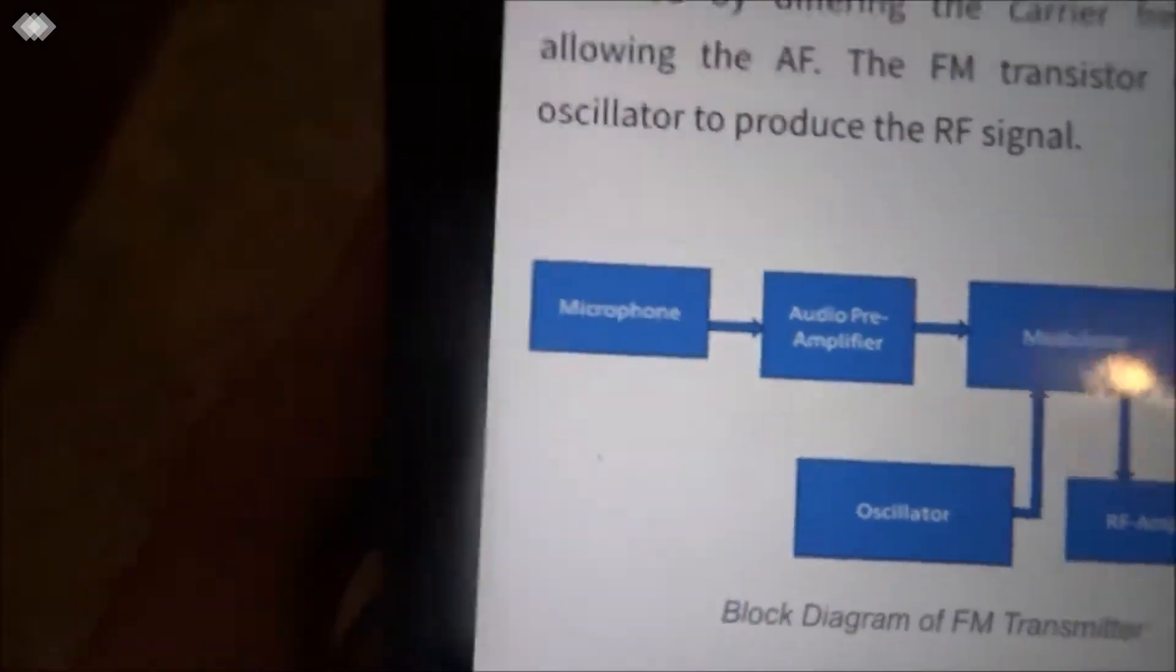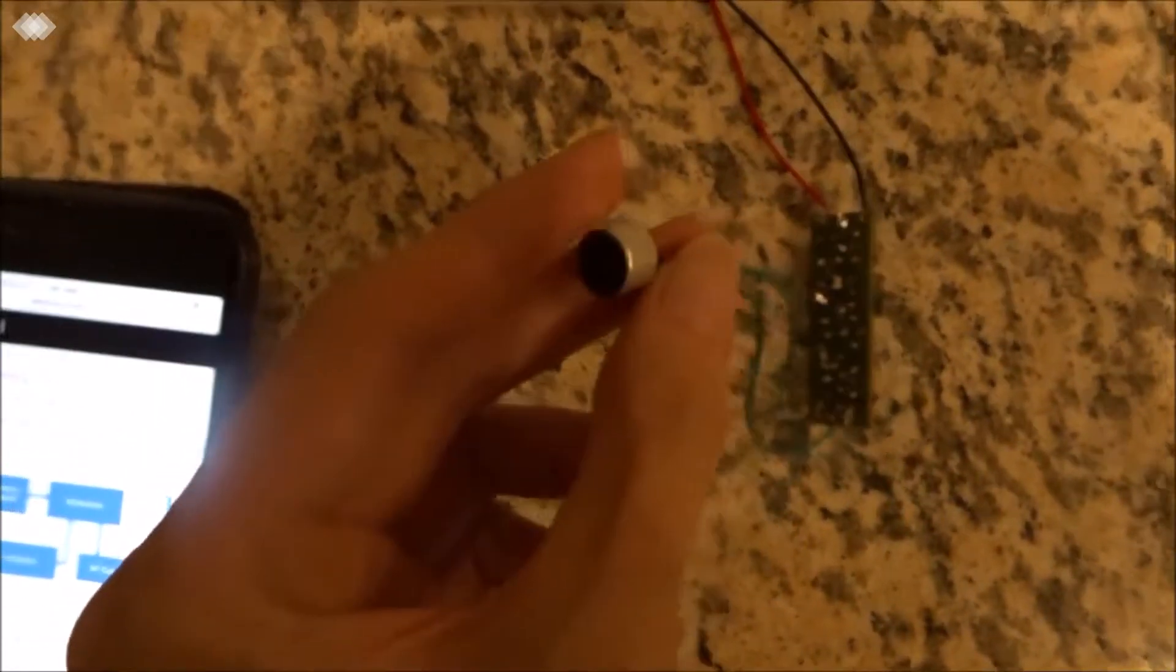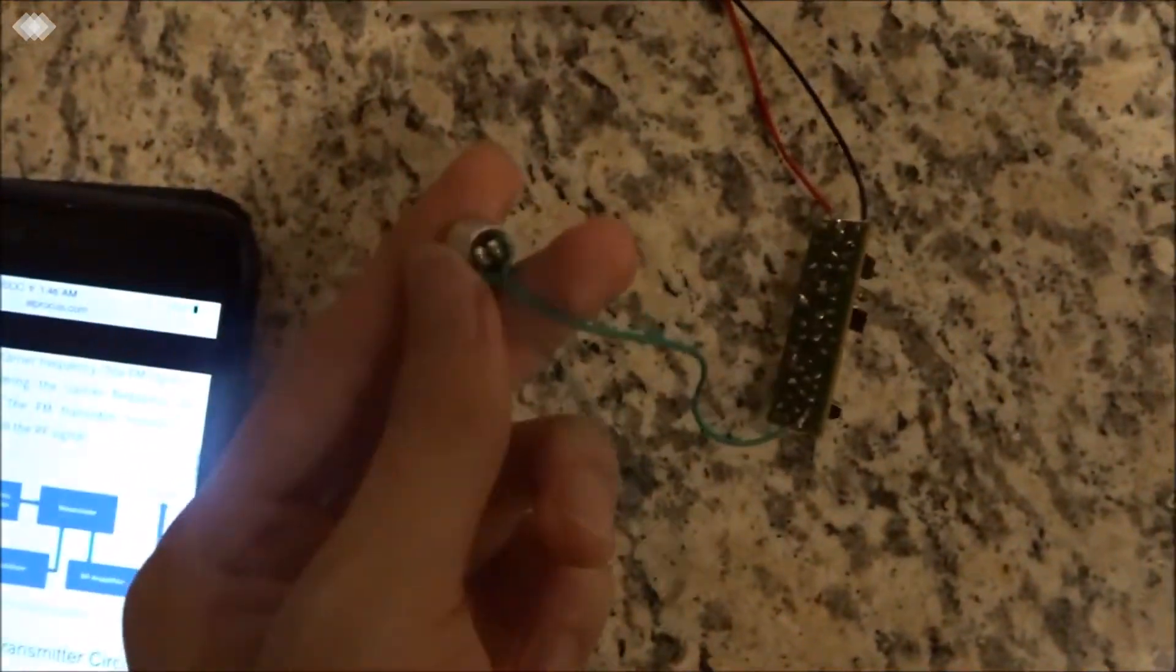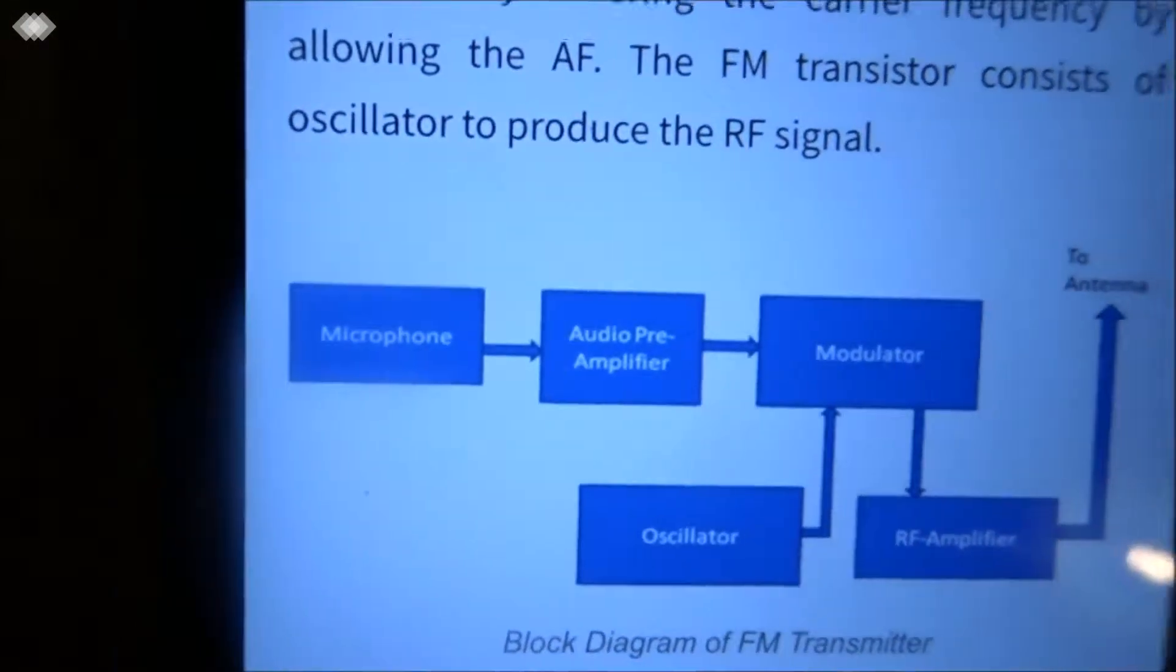First, when we speak through the microphone which is here, it generates electricity because there's a magnet and coil. This one actually broke. Then it goes to the audio pre-amplifier, which is these components.